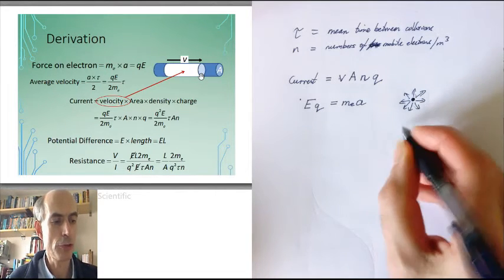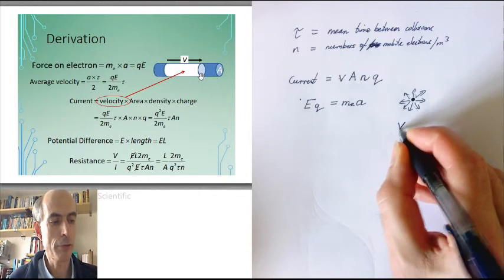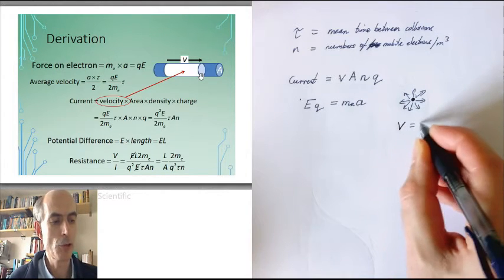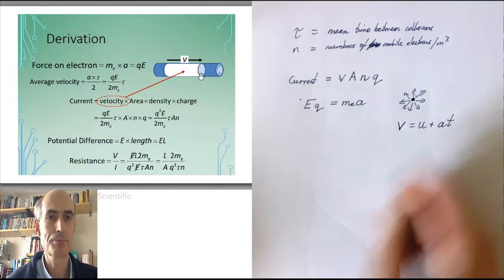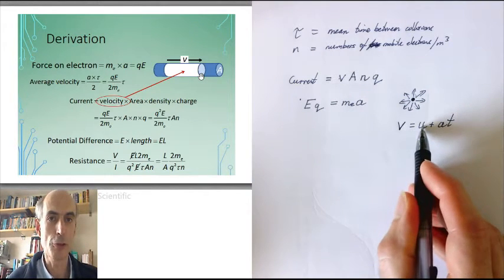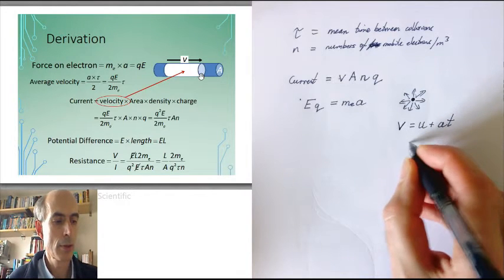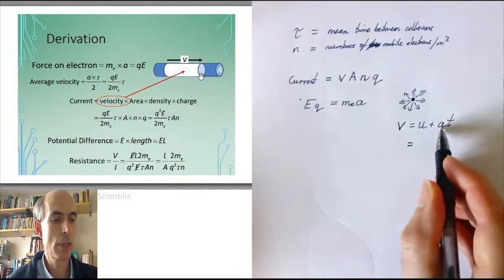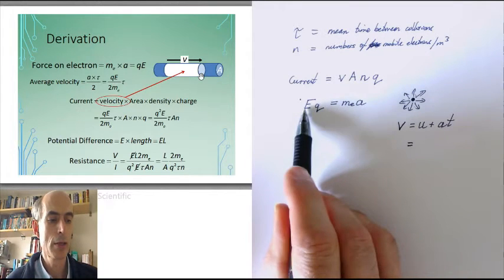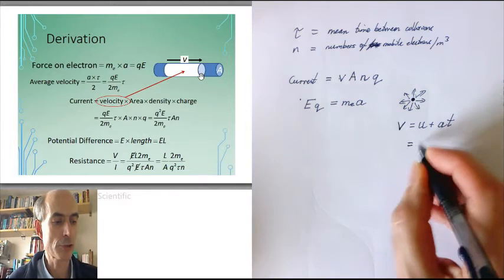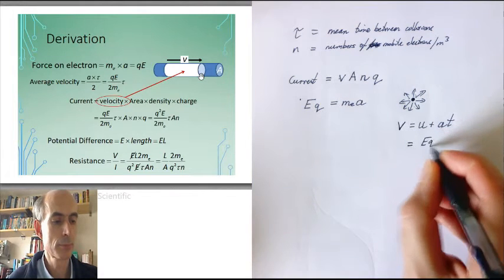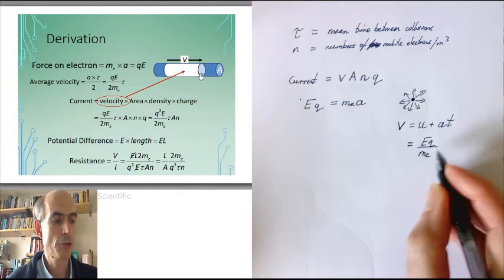There's an equation of motion. The velocity, the final velocity, is the initial velocity plus the acceleration times the time. The initial velocity is zero. The acceleration is, from this expression here, the electric field strength times the charge divided by the mass of an electron.